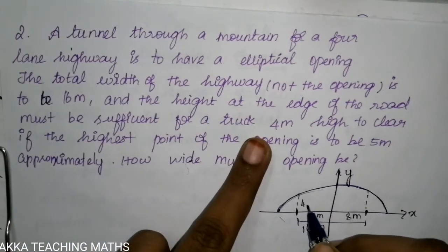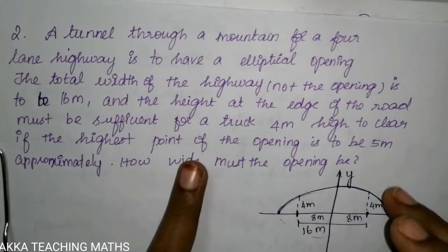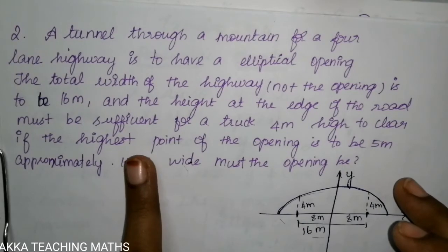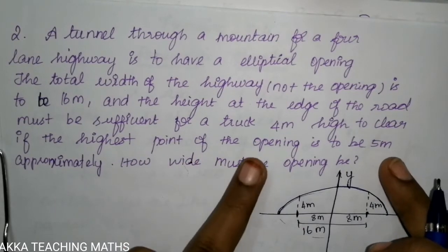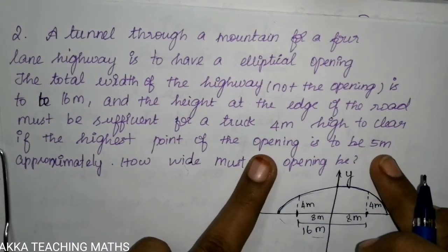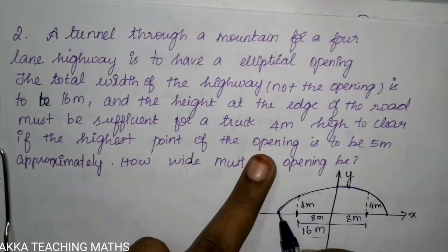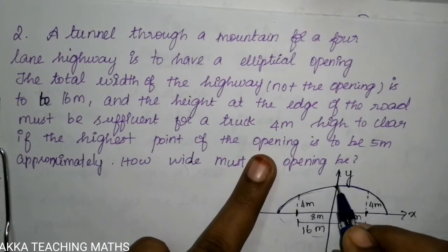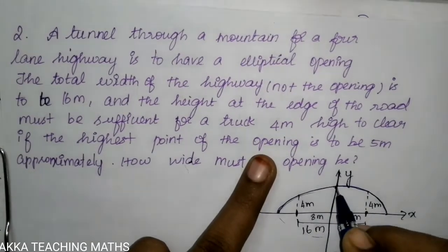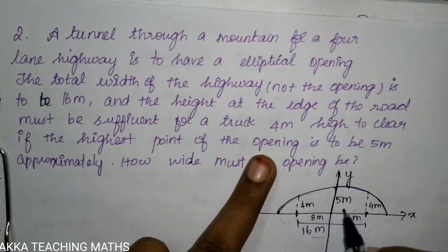The height at the edge of the road — that height is 4 meters. The track is straight. The height is 5 meters; if the highest point of the opening is to be 5 meters, this highest point is here, so the height is 5 meters.